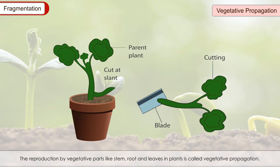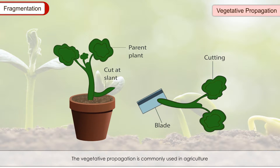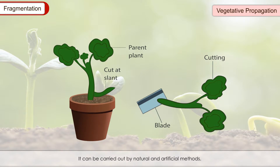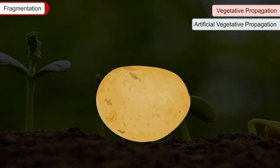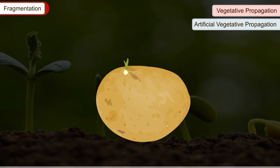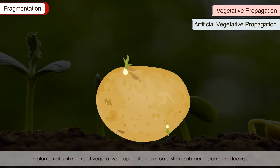Vegetative Propagation: The reproduction by vegetative parts like stem, root and leaves in plants is called vegetative propagation. It is commonly used in agriculture and horticulture for the production of vegetables and fruits in large numbers. It can be carried out by natural and artificial methods. In plants, natural means of vegetative propagation are roots, stem, sub-aerial stems and leaves, which modify to undertake the function of vegetative reproduction.